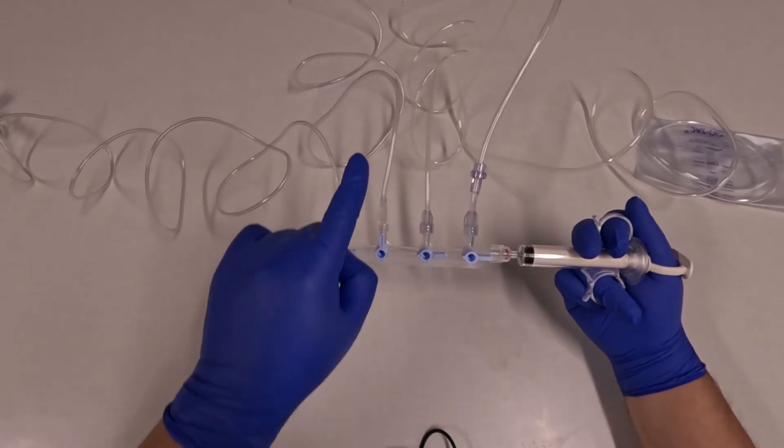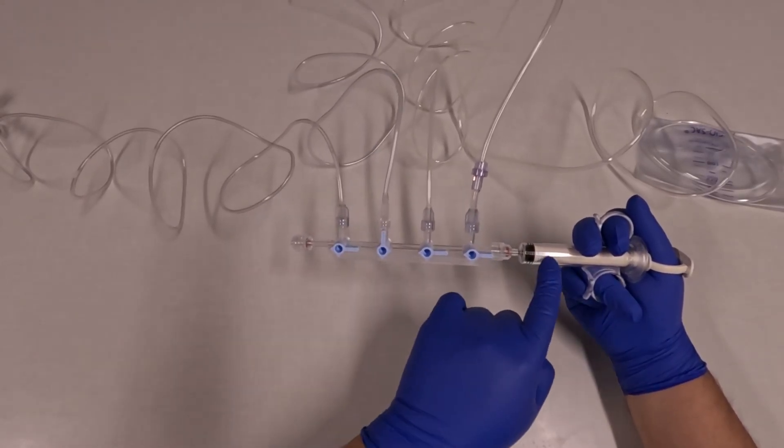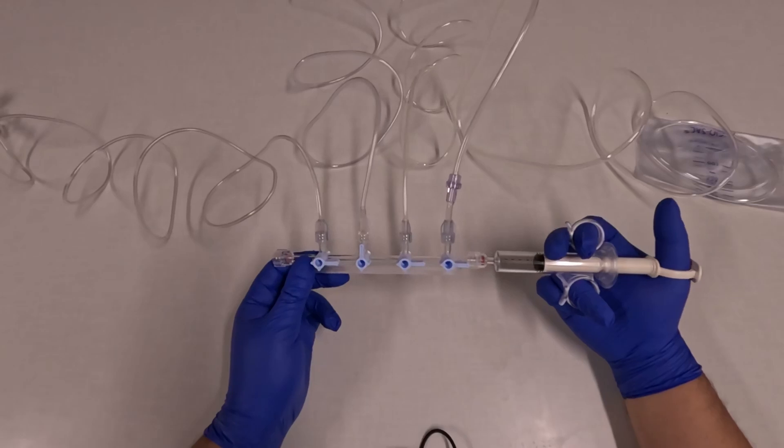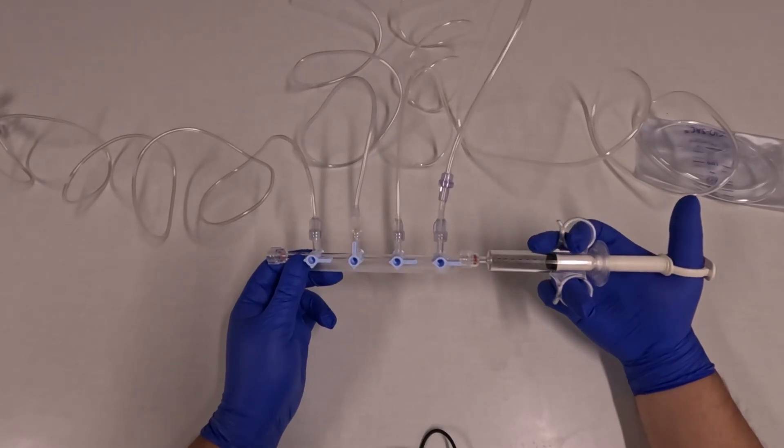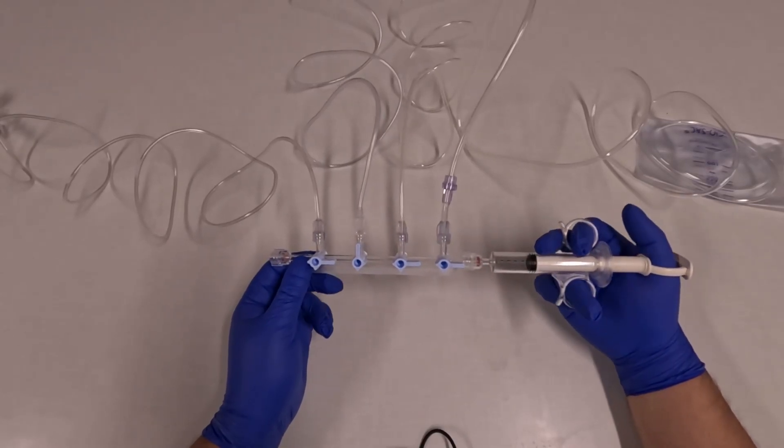If I turn the fluid port up, now there's a path from fluid to my syringe. So when I pull back, I'll pull fluid from the fluid bag to my syringe.